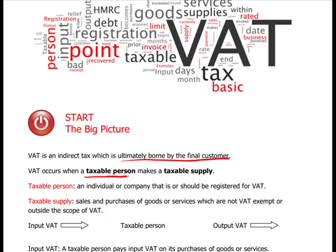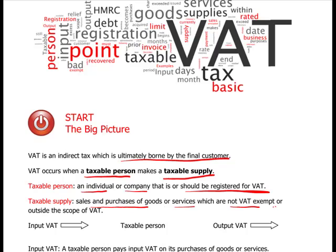When does VAT occur? You have to be a taxable person making a taxable supply. A taxable person can be an individual or a company that is or should be registered for VAT. A taxable supply is sales and purchases of goods or services — so it's not just goods and not just services — which are not VAT exempt or outside the scope, and we'll look at those shortly.